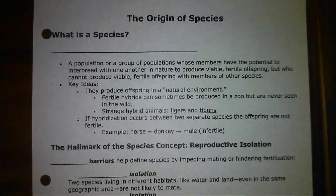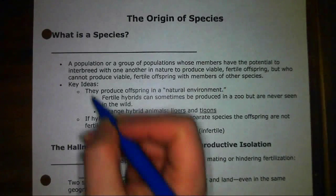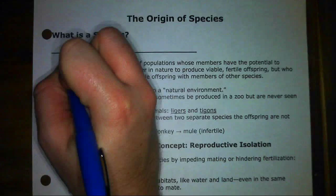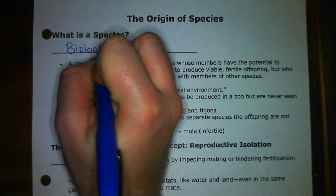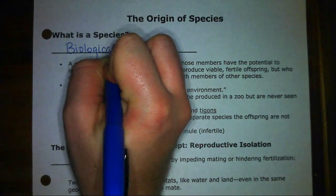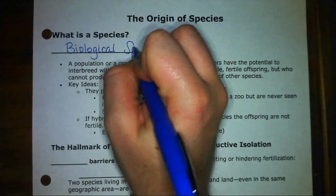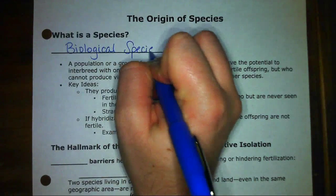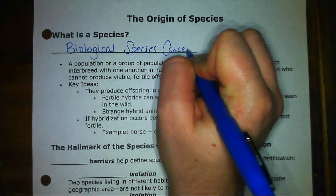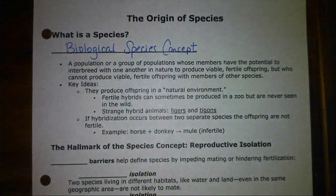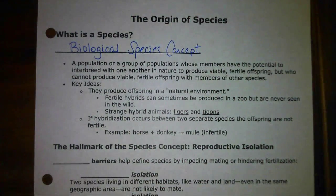In this video I'm going to talk about an idea called the biological species concept. Let's write that down first. Biological species concept — this is going to be the main definition we're going to focus on and what really makes a species.